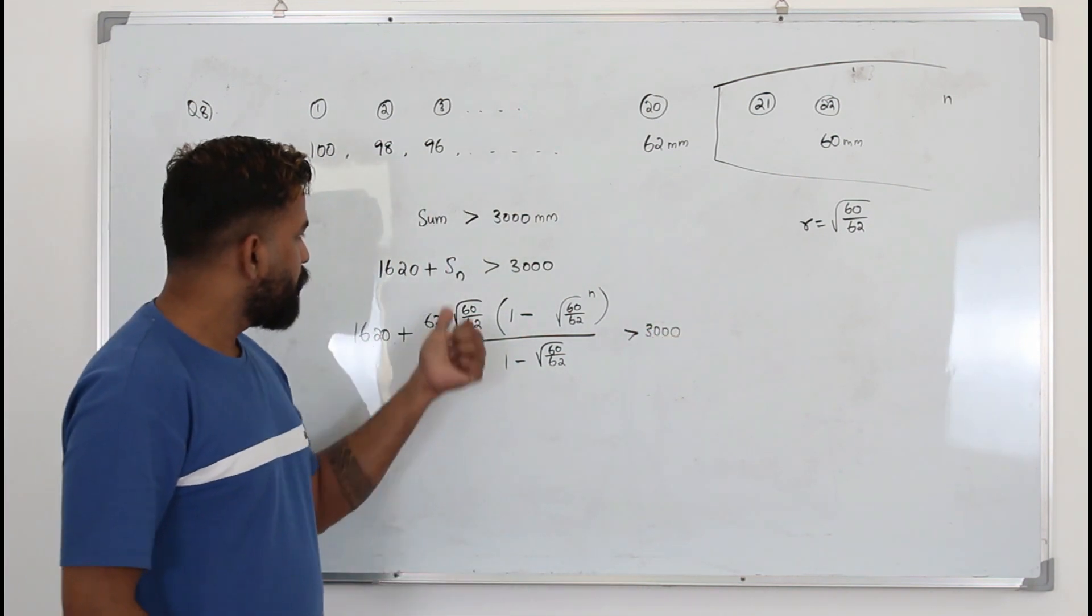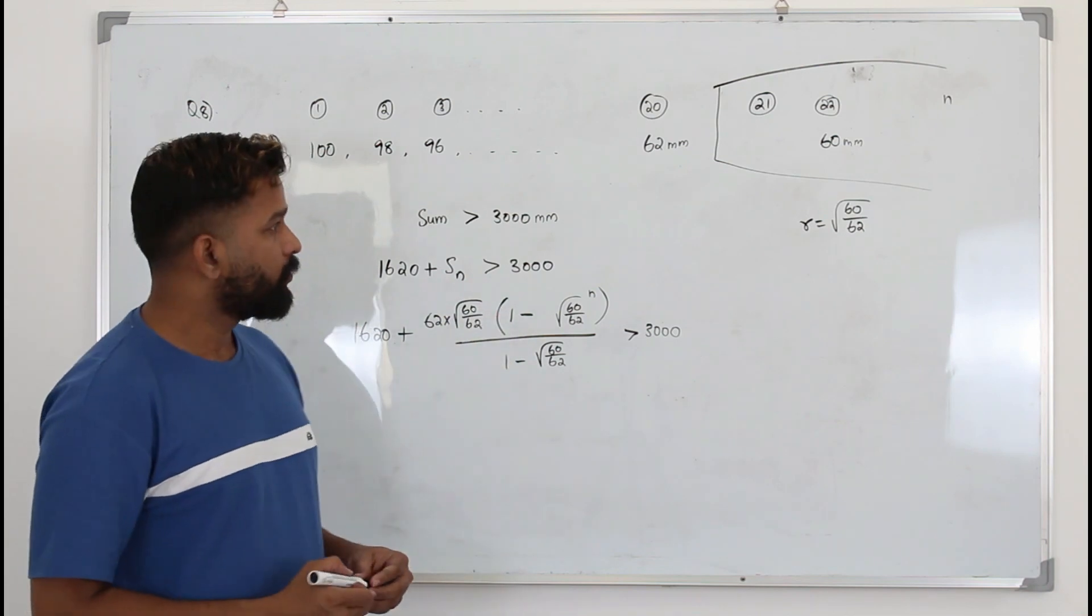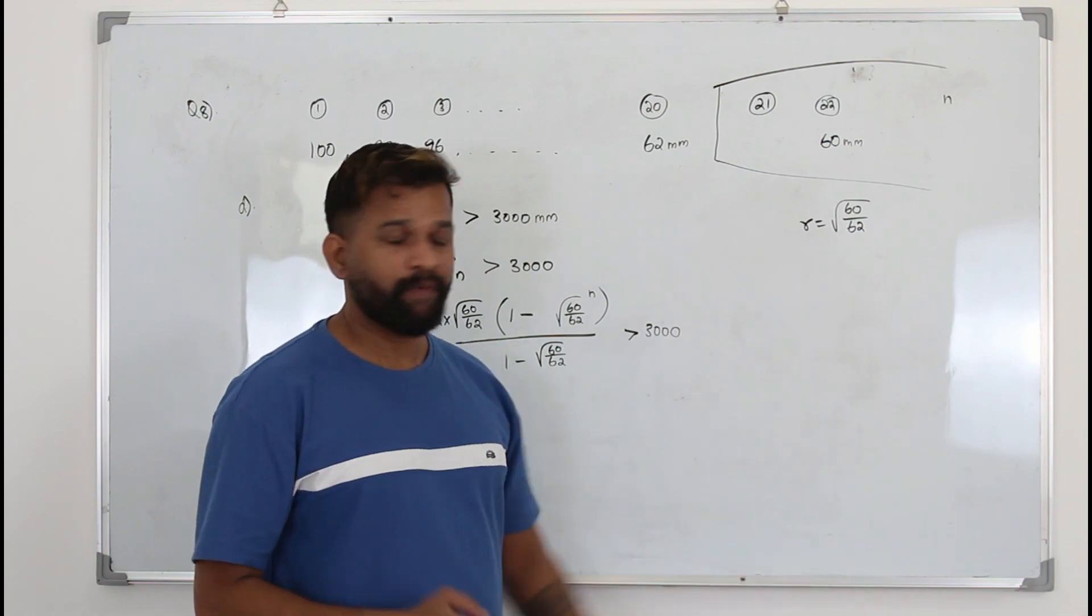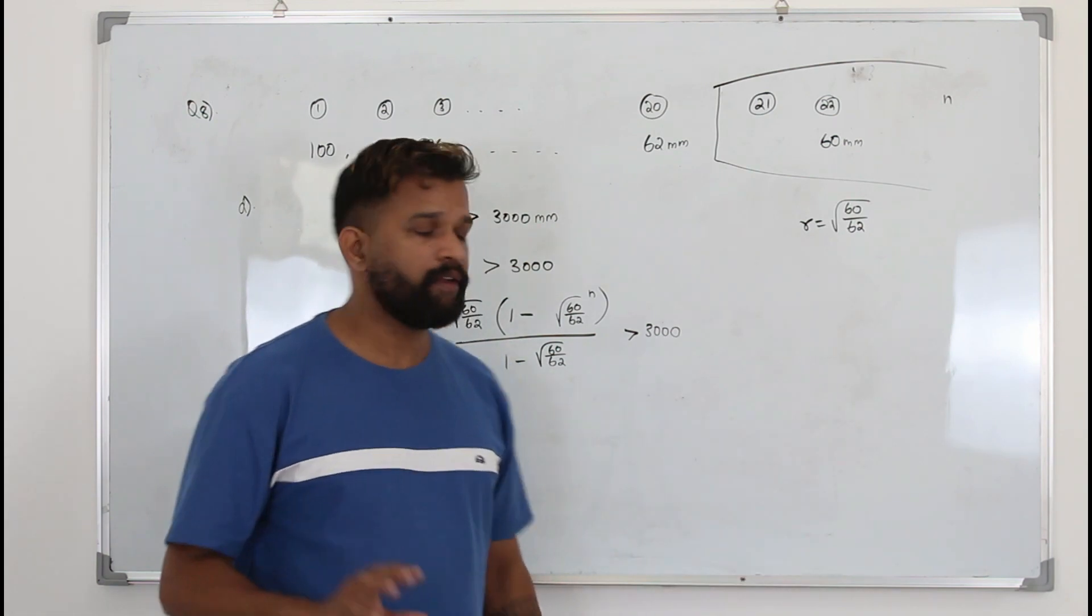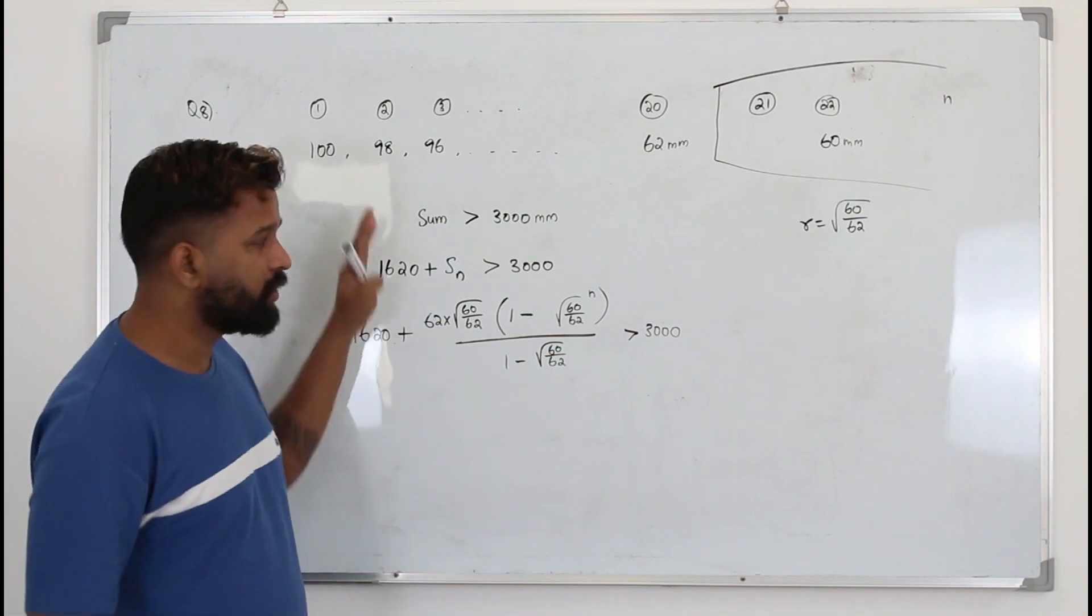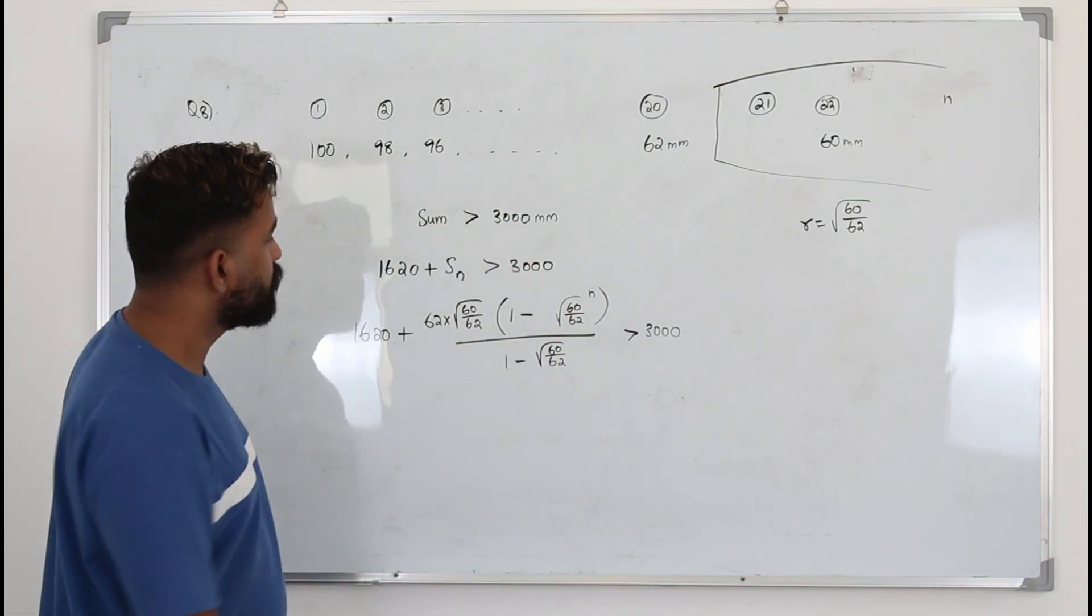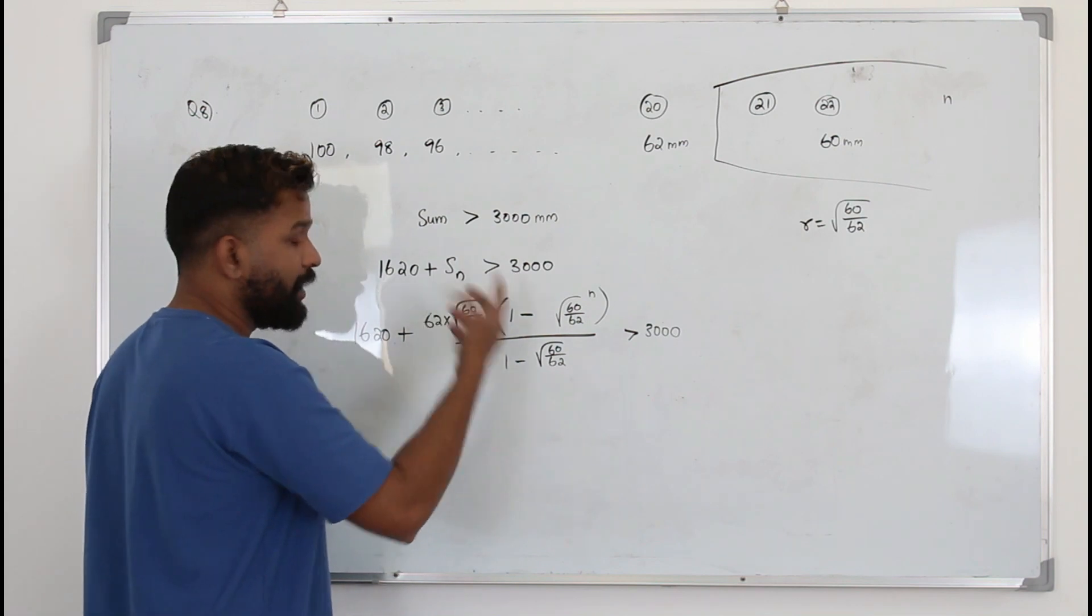If you are wondering why I'm using the exact value, we got the r value rounded to three decimal places in part C. Do not use the rounded value. If you use the rounded figure in between your calculation, your final answer will be totally different. Try to use the exact value.